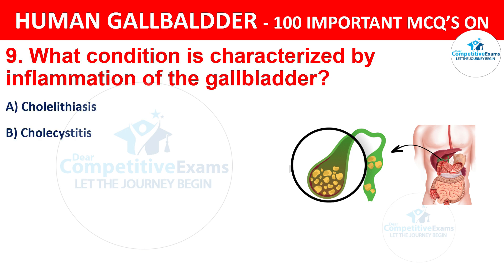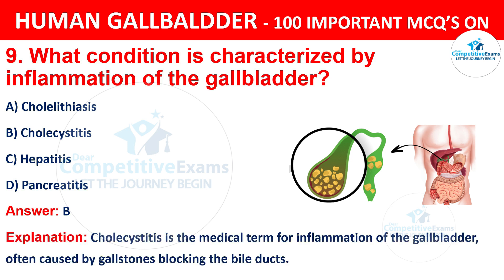Question 9: What condition is characterized by inflammation of the gallbladder? Your options are: A) Cholelithiasis, B) Cholecystitis, C) Hepatitis, D) Pancreatitis. The correct answer is B, i.e. Cholecystitis. Cholecystitis is the medical term for inflammation of the gallbladder, often caused by gallstones blocking the bile ducts.